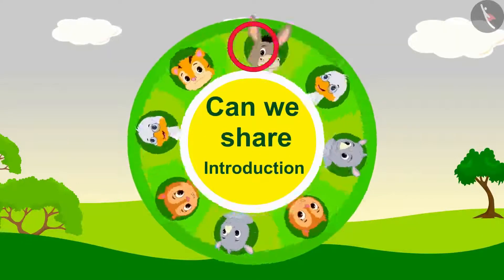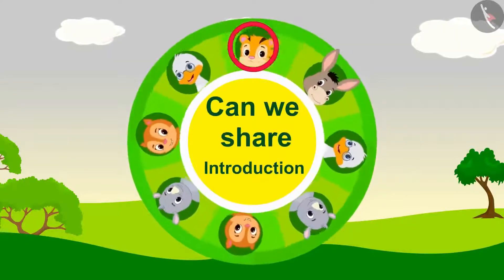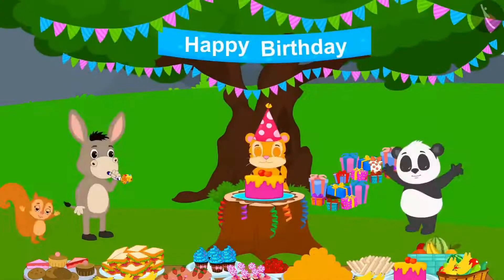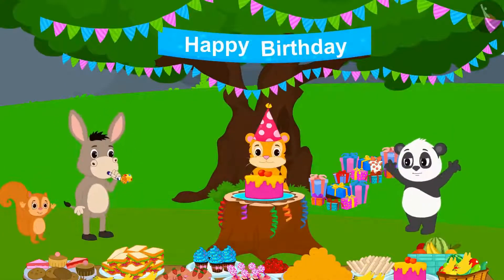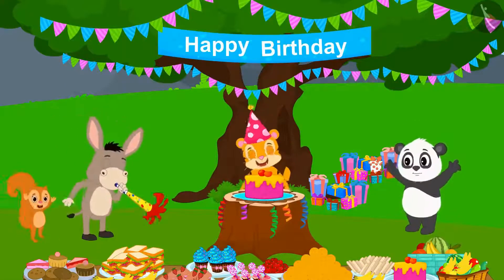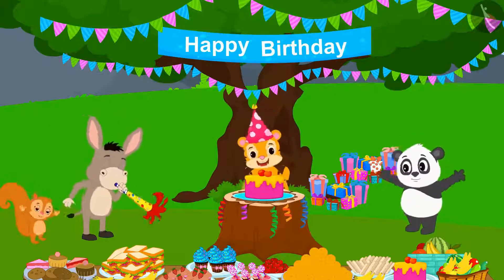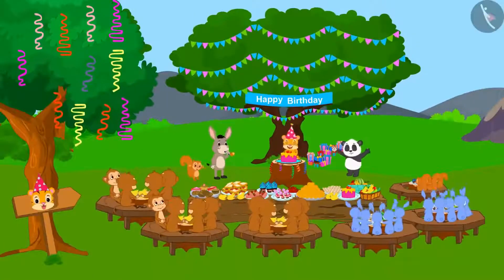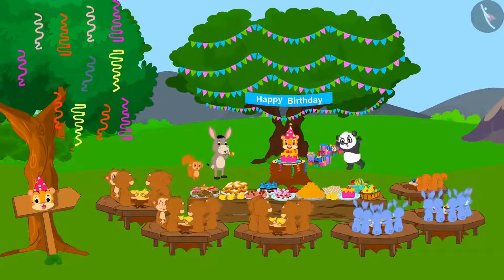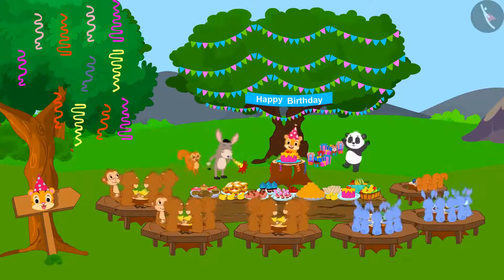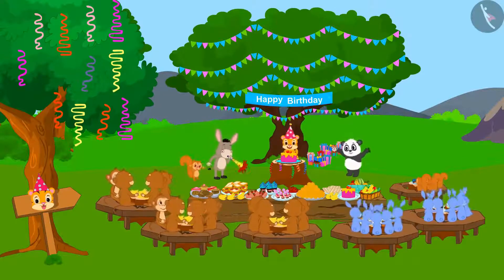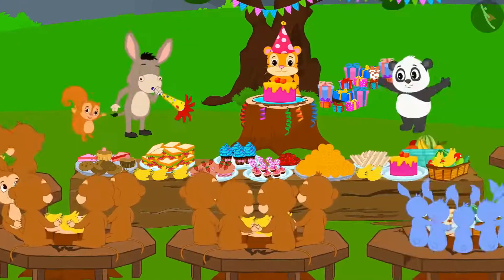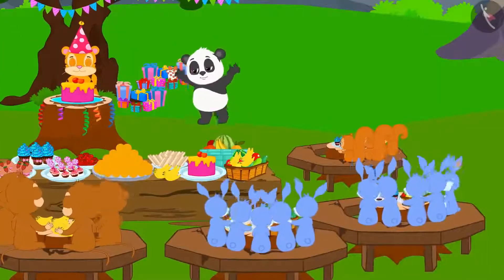Division: Equal Grouping. Today is the King of the Forest, Shere Khan's birthday. All the animals of the forest have been invited for the birthday celebrations. Different animals are sitting in groups.